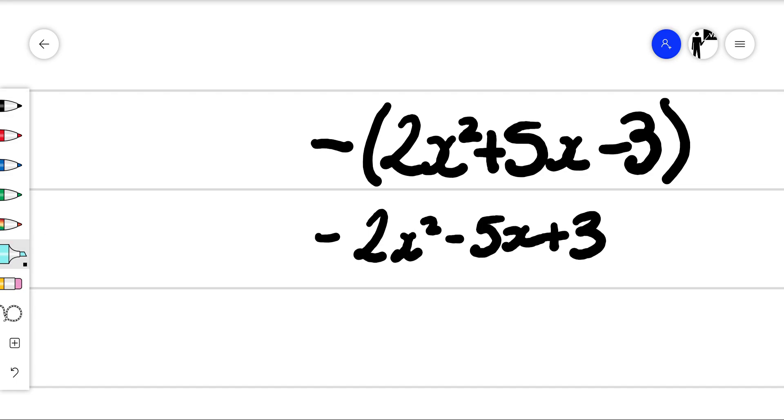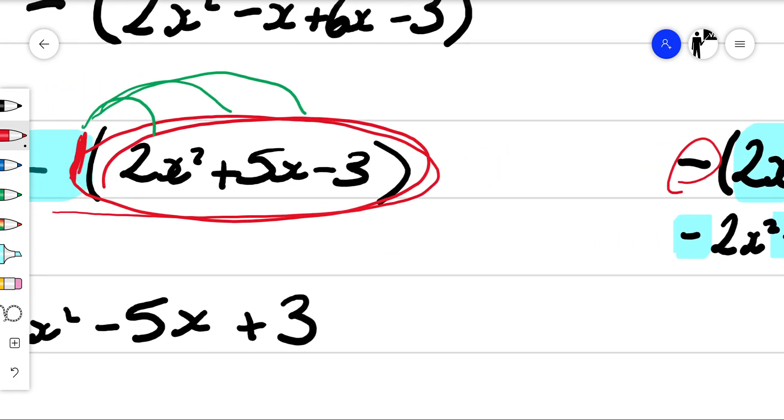Notice how the signs kind of switch over. Technically, this is a plus 2x squared, and it becomes minus 2x squared. The plus 5x becomes minus 5x. The minus 3 becomes plus 3. And that just happens because that's what happens when I multiply by negative 1.